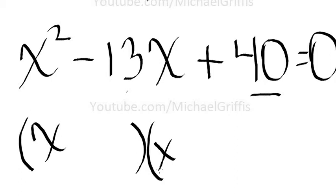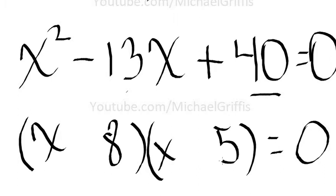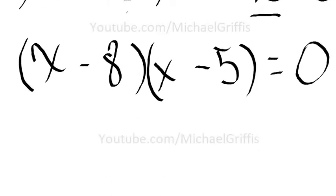So let's write down what we know. 40 is positive but 13 is negative, that means 8 and 5 both are going to be negative. So we're going to write x minus 8, x minus 5.